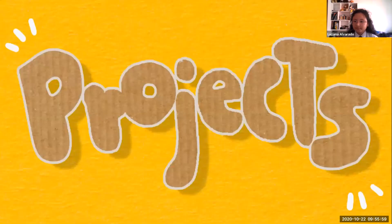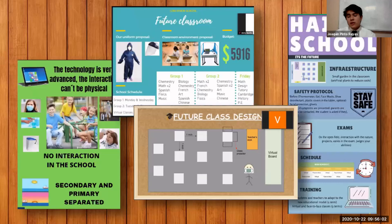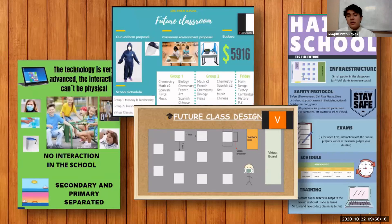Now we will see some of the projects our peers presented — not only from this class, 9A, but also from 9B and 9C. What we are seeing specifically are the infographics, which show the details and materials that the students planned to use for their product.